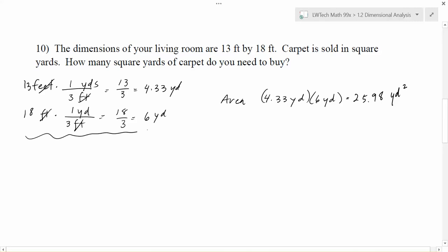So this is one solution method that we can use because we did know that there were 3 feet in a yard and we could use that particular conversion factor. Another way that we can do this problem is to go ahead and figure out how many square feet there are. So right now if we know that our living room is 13 feet by 18 feet.